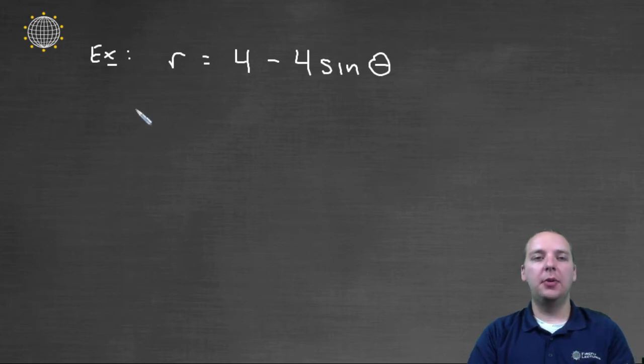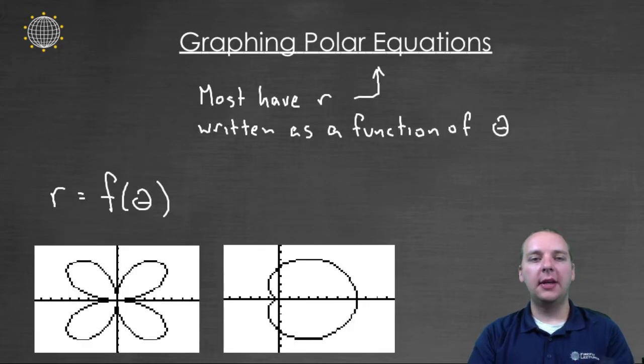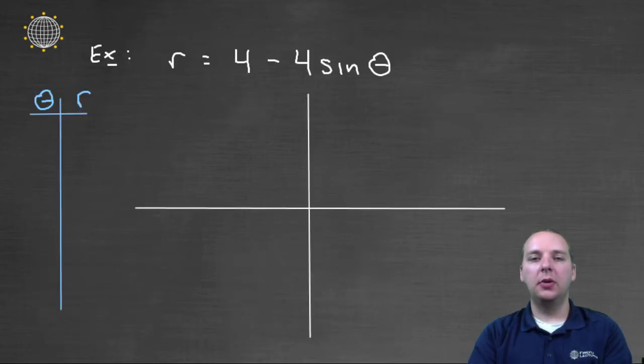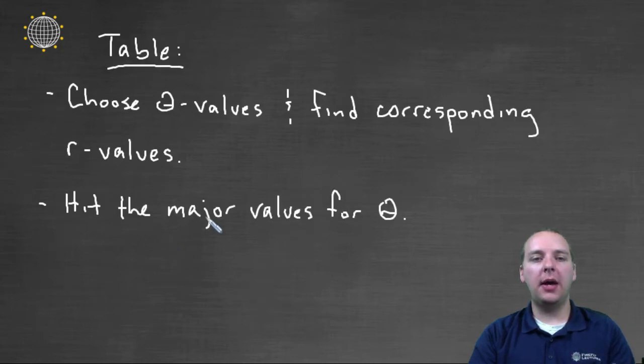Alright, so let's look at an example here. So this is a classic example. You'll see many examples like this. R equals 4 minus 4 sine theta. So as I said earlier, what I have here is I've got R expressed as a function of theta as most of these are. And so what we're going to do is we're going to make a chart where we're going to pick some thetas and we're going to find the R's that go with them. Now, let's go back here for a minute. What did I mean by major angles or major values for theta?